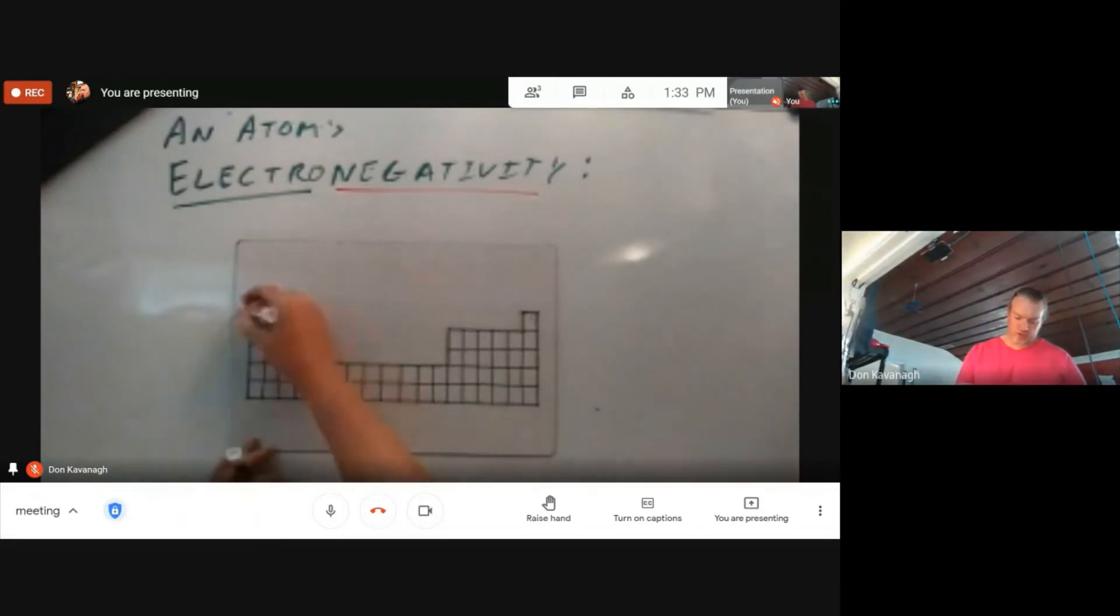The primary electronegativity trend is up. The higher you get on the periodic table, the greater that atom's ability is to pull electrons in a covalent bond.